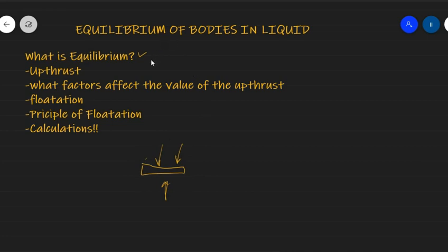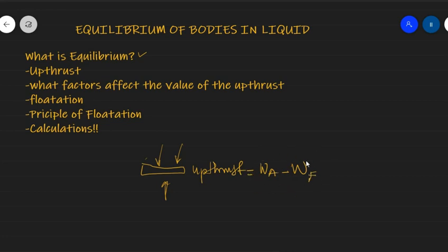The system of forces in a body is said to be in equilibrium such that the resultant of these forces is zero. As for uptrust, it is the force that tends to make the weight of an object — like the bucket I described — appear lesser than it truly is when lifted up from the well. Uptrust equals weight in air minus weight in fluid.